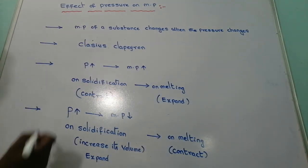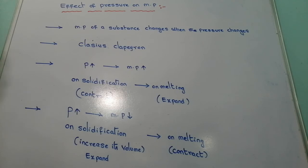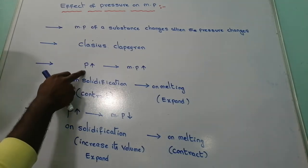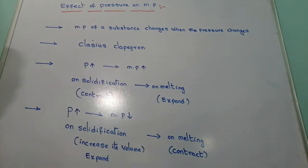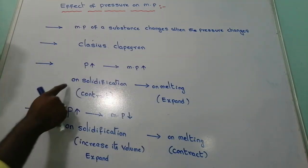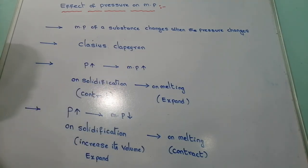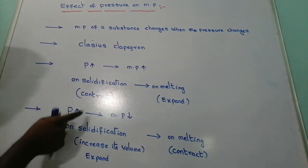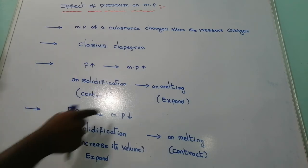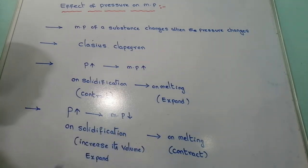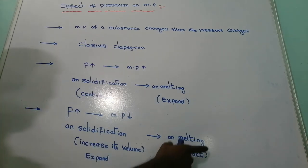So this makes the difference. According to Clausius-Clapeyron, the melting point of a substance changes when the pressure changes. For most cases, when the pressure increases, the melting point also gets increased — on solidification these substances contract, and on melting they expand. For a few substances, when pressure increases, the melting point is lowered — on solidification they expand, and on melting they contract.